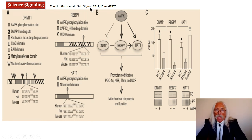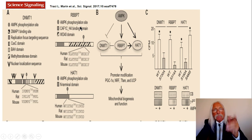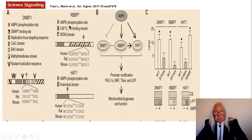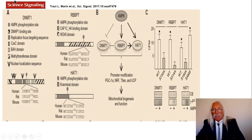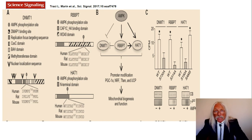Here's DNMT1, here's RBPP7 (a cofactor for stimulating HAT), and here's HAT itself — all of these have phosphorylation sites in their promoter regions. They also have nuclear localization sequences and other molecular decoration that makes these proteins functional. Every one of them is altered by AMP kinase — AMP kinase phosphorylation sites are present on DNMT1, on RBPP7, and on HAT. These are the promoter regions of these genes, controlled by and controlling the epigenetic systems now downstream from AMP kinase.